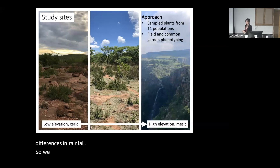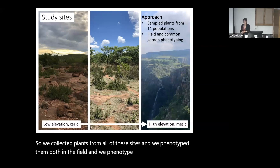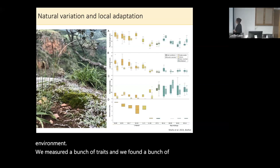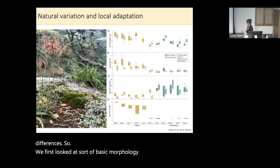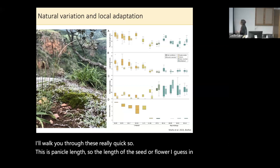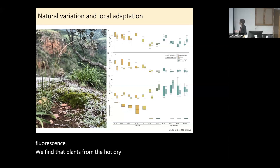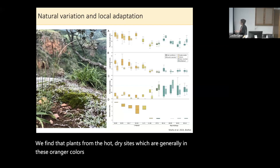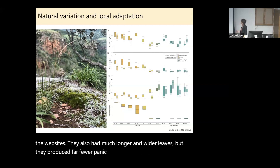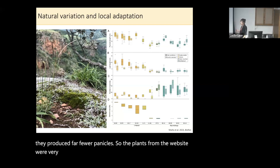We measured a bunch of traits and found a bunch of differences. Looking at basic morphology: panicle length — the length of the seed or flowering structure — plants from the hot-dry sites, generally in orangier colors, had much larger panicles than plants from the wet sites. They also had much longer and wider leaves, but produced far fewer panicles. The plants from the wet sites were very reproductive, but much smaller and bushier.